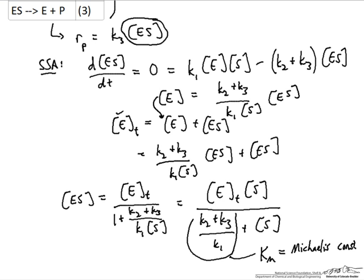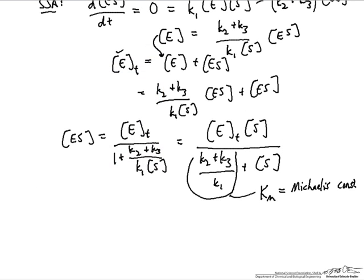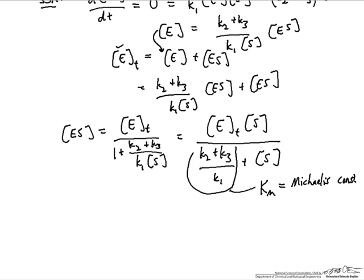The Michaelis constant, if we look at our reaction steps, is equal to the rate with which the substrate comes off of the enzyme divided by the rate constants associated with the substrate attaching to the enzyme. So the higher the Michaelis constant, the more rapid the detachment of the substrate from the enzyme — either as unreacted substrate or as product — relative to the attachment of the substrate to the enzyme.